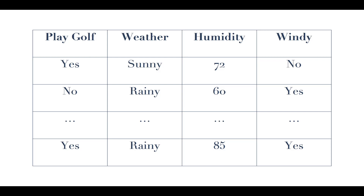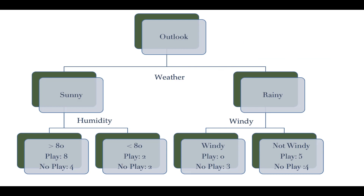Now I'm going to show you a very simple representation of how we would make a split in this data and an example of a decision tree for random forests. As you see here, this is like a simple flowchart. Our first split was on weather — sunny or rainy. Within sunny we then split across humidity levels, greater or less than 80, and within rainy we split across whether or not it was windy.